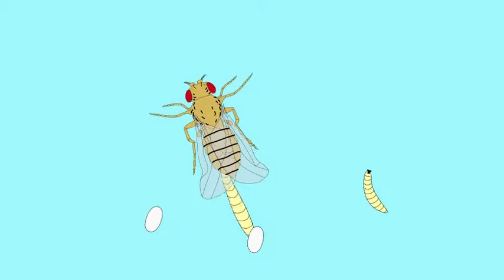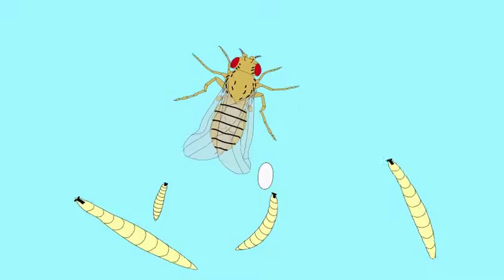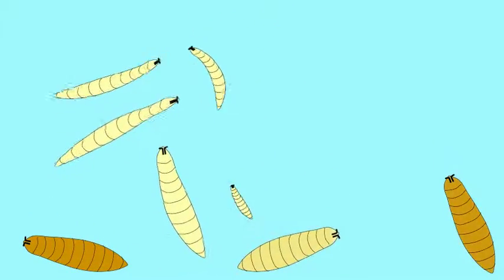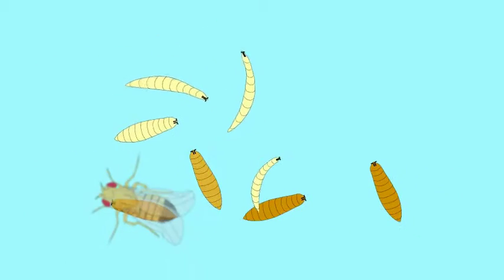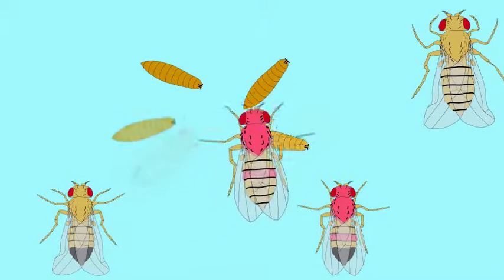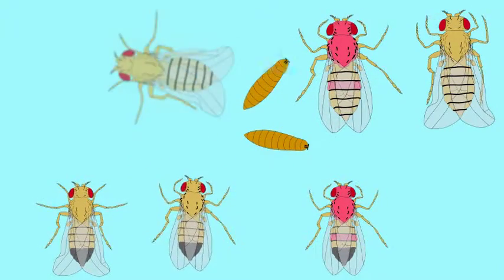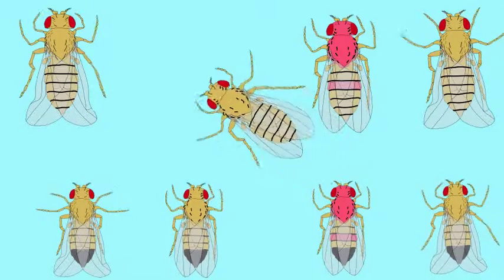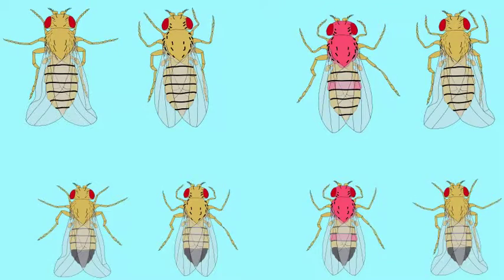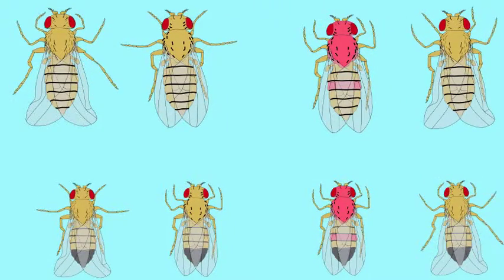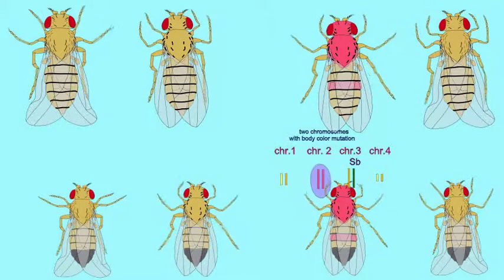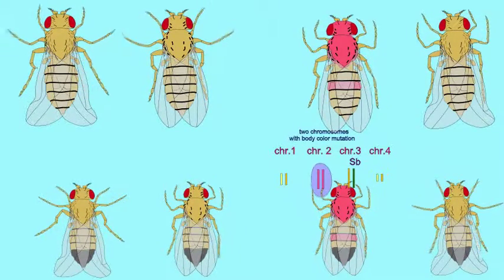If some of the stubble flies express the red body color, but none of the curly flies express the red body color, then we would have mapped the new mutation to chromosome two, because the stubble mutation on chromosome three does not affect the expression of this red body color mutation on chromosome two.